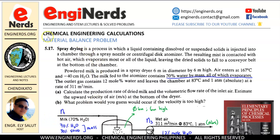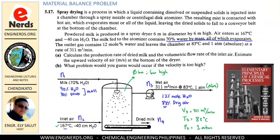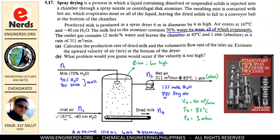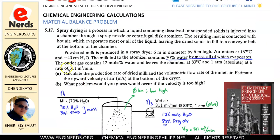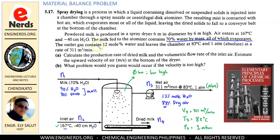Hi guys, today we're going to solve another material balance problem for our topic, chemical engineering calculation. This problem is coming from the book Elementary Principles of Chemical Processes by Felder, Problem 5.17.